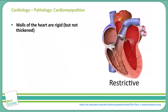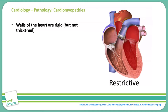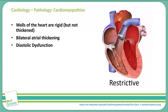Let's discuss restrictive cardiomyopathies. In restrictive cardiomyopathies, the walls of the heart are rigid but not thickened. As you can see in this picture, the heart may appear a little large in this drawing, but this is a normal size. What we're dealing with is a restriction, specifically more common in the atrium, so we see bilateral atrial thickening and restriction of the ventricles, leading to diastolic dysfunction due to the inability of those ventricles to stretch and fill with blood properly.